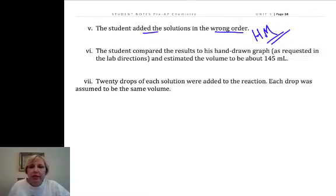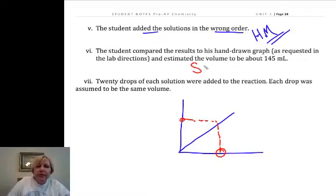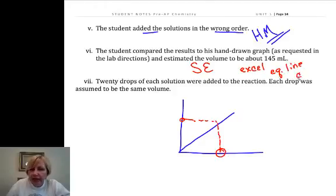The student compared the results to his hand-drawn graph, as requested in the lab directions, and estimated the volume to be about 145. What that means is that we drew a graph by hand, and then we tried to read values off of the graph. And that's not a bad way to do it. That's commonly done. But it's going to have some experimental error. It's a source of error. And what you could do in this case is maybe graph it using Excel or some sort of spreadsheet, and then you can mathematically get the equation for the line and you could calculate. So sometimes people don't have access to Excel and we want to improve your graphing skills. And so we've asked you to do it by hand. And it's going to be limited. That's a limitation of the design and the instructions.